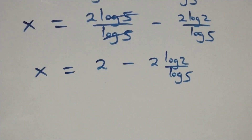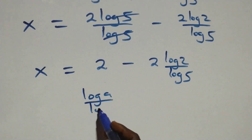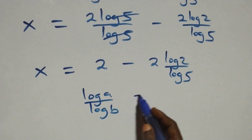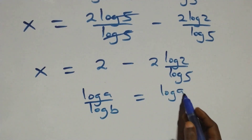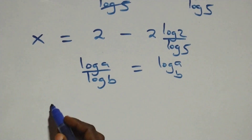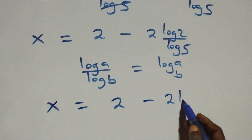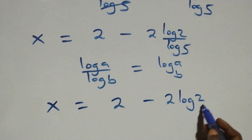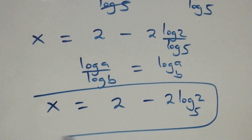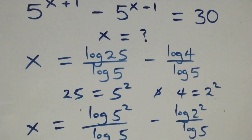Applying the change of base rule — when we have log a over log b, it is the same thing as log a to base b — we get x equals 2 minus 2 log 2 base 5. That is the value of x. Now let's verify whether this satisfies the given problem by substituting the value of x.